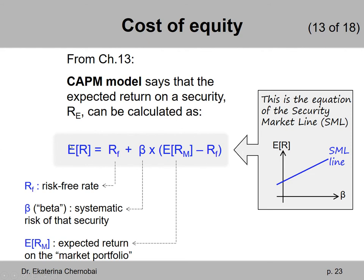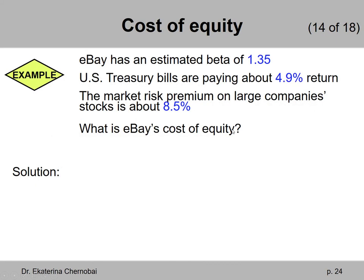We're focusing on the equation for the CAPM — the Security Market Line, or the CAPM's main formula. Let's review the CAPM formula with the following example: eBay has an estimated beta of 1.35, US Treasury bills are paying about 4.9% return, and the market risk premium on large company stocks is about 8.5%. What is eBay's cost of equity? We are given the beta, the Treasury bill rate which is the risk-free rate, and something about large company stocks.